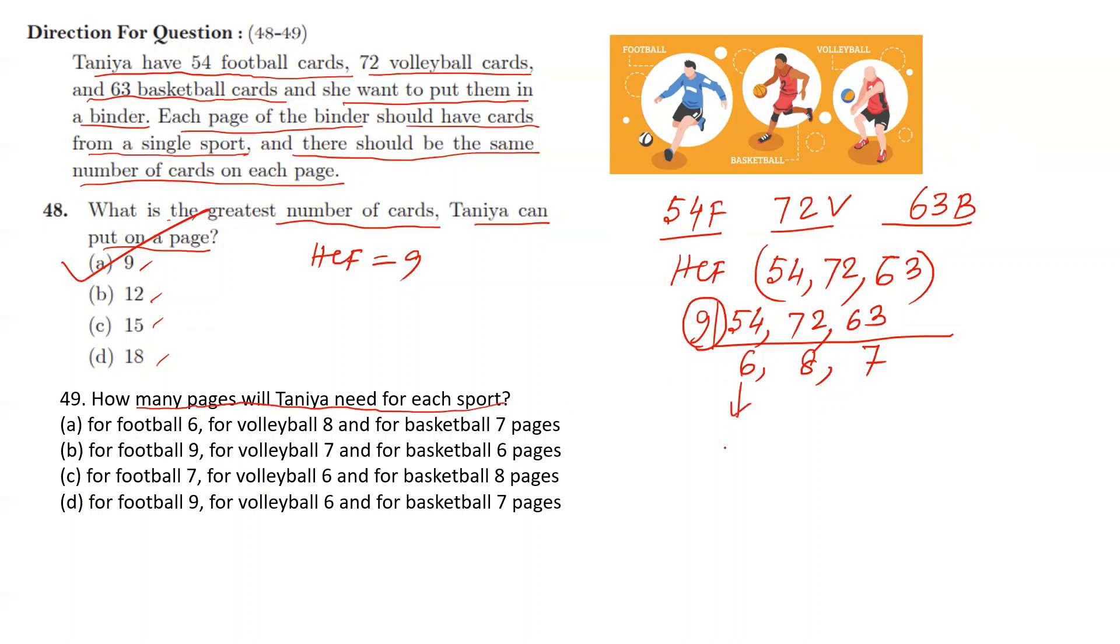This is for football, this is for volleyball, this is for basketball. So 6, 8, 7. How many pages will Tanya need for each sport? For football 6, for volleyball 8, for basketball 7 pages. So no need of going for other options.